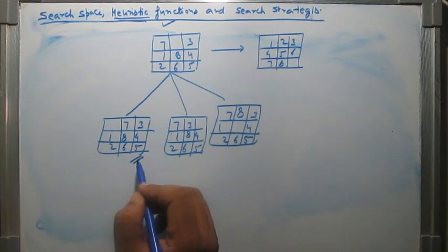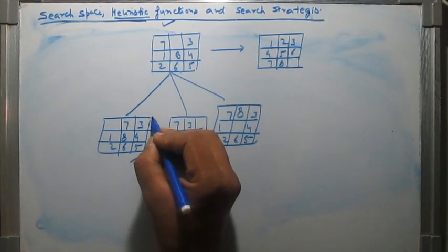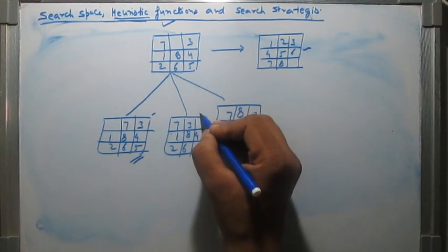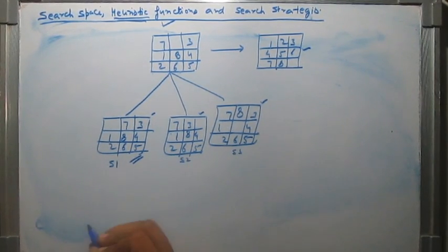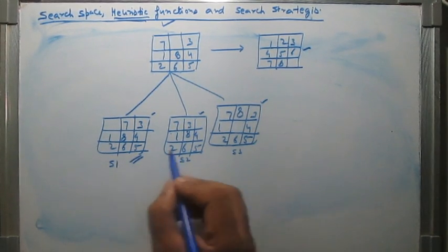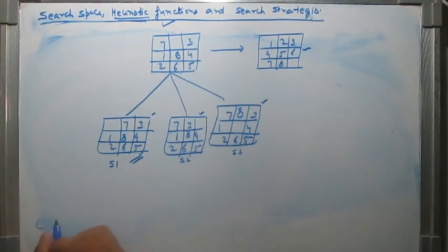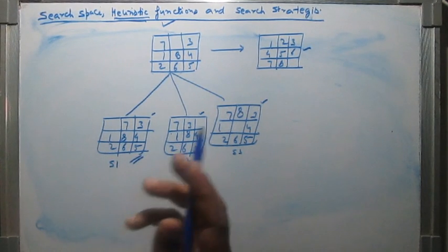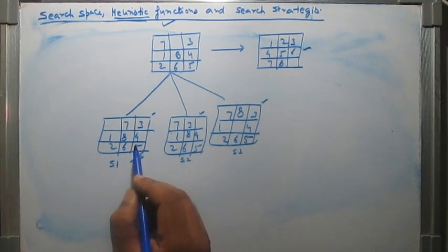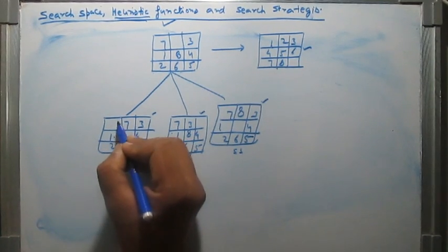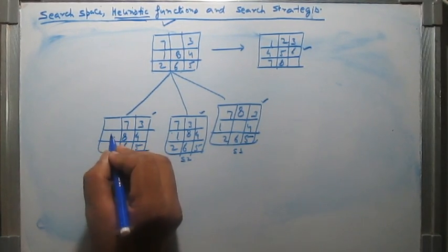That criteria will calculate the distance of each state from the goal state. For example, we want to know how far this state is from the goal, how far this state is from the goal. Let us say this is state 1, state 2, state 3. We have to find the distance of the goal state from each of the states. The function which we are going to use to find the distance is called the heuristic function. There may be different criteria to find the distance. We are using one: let us find the distance of each wrongly placed tile from its correct position. For example, this 1 — the 1 should be here at this place but it is here. So the distance of 1 from its correct position is one.